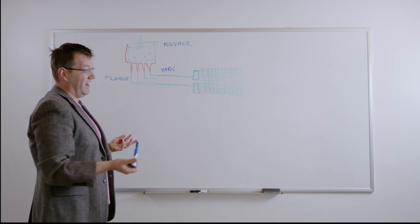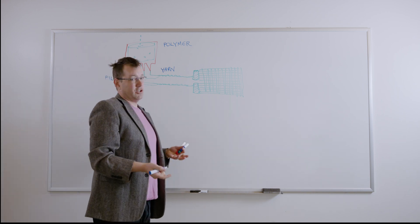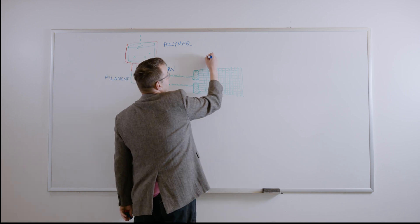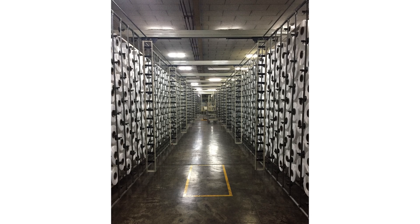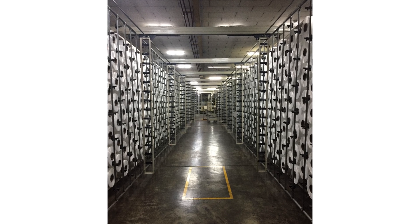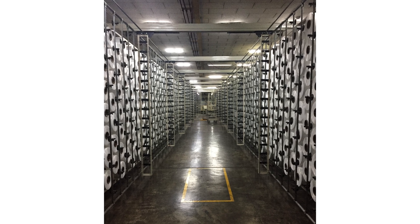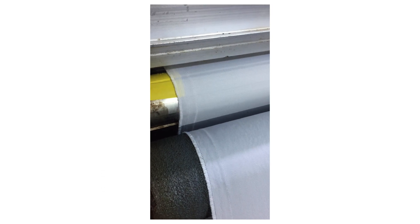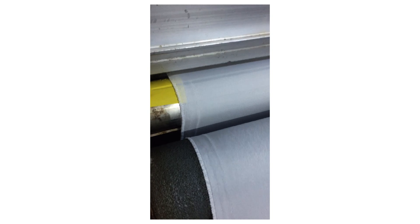At this point it's undyed. People call it gray goods, but most commonly it's called greige. So this is just an undyed textile. It's kind of a dull white or a light gray color, and it's just bulk fabric.